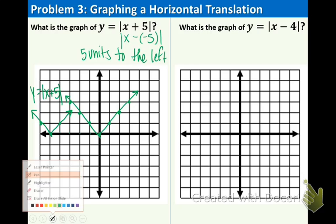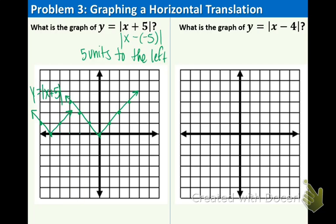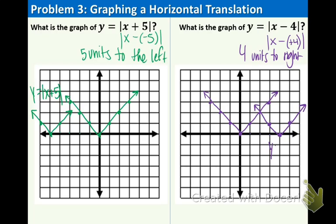Now let's take a look at the right side: Absolute Value of X minus 4. The number is inside, so we're going left or right. It's a minus, which means we're going to the right — technically it looks like X minus a positive 4, so that's why we go to the right. Plot the parent graph, start at (0, 0), and go 4 to the right: 1, 2, 3, 4. Put a point there and then up one over one. Y equals Absolute Value of X minus 4. Typically we draw parent graphs in dashed lines, but it really doesn't matter as long as it's obvious which one is the answer.